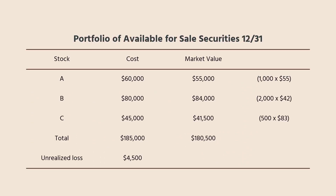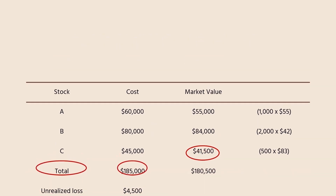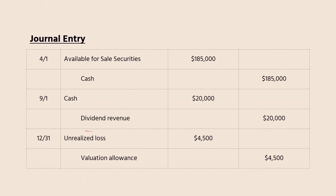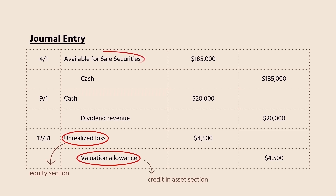On December 31st, the market prices of the securities change. The analysis of the year-end portfolio shows that the total market value is now $180,500, resulting in the necessity of a fair value adjustment — an unrealized loss of $4,500. The entry will be a debit of unrealized loss of $4,500, shown on the balance sheet in the equity section, while the credit of the valuation allowance of $4,500 goes along with the debit of $185,000 of available for sale securities, shown together in the assets section.